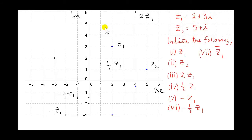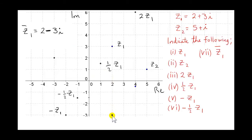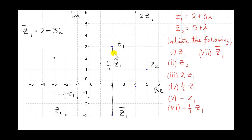Now what about z1 bar — the conjugate of z1? Since z1 is 2 plus 3i, z1 bar is obtained by changing the sign of the imaginary part, giving 2 minus 3i. The real part is plus 2 and the imaginary part is minus 3. Notice that this is the image of z1 under axial symmetry in the real axis — we fold the complex plane over the real axis and z1 maps onto z1 bar.